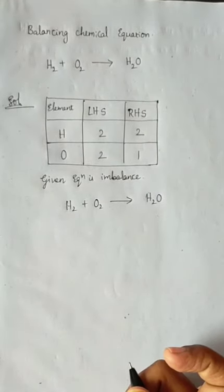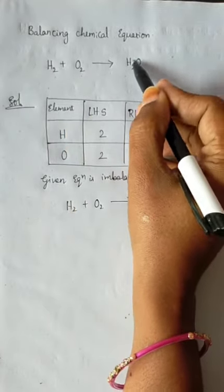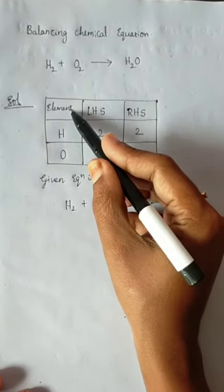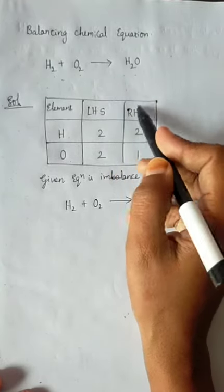Let's learn how to balance a chemical equation. So here is the equation H₂ plus O₂ gives rise to H₂O. So we have to write element hydrogen, oxygen. LHS, RHS must be equal.